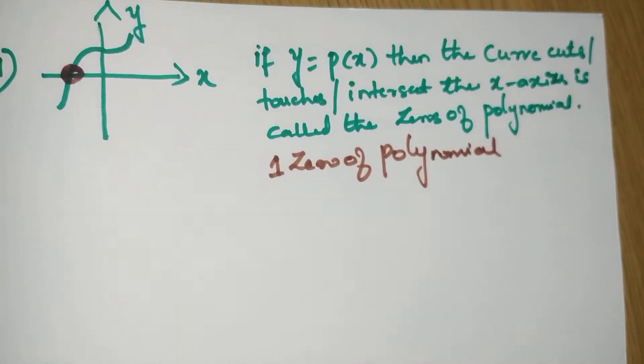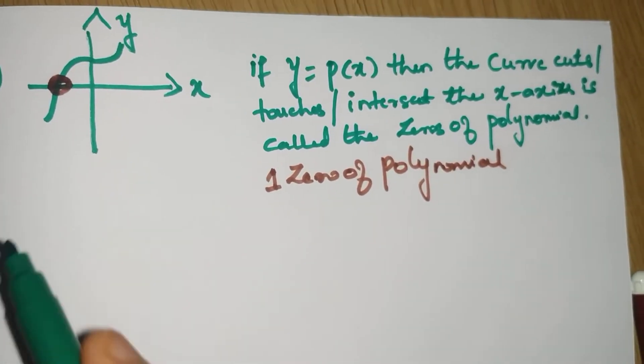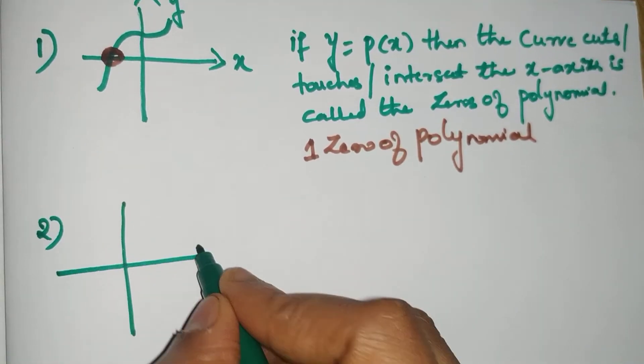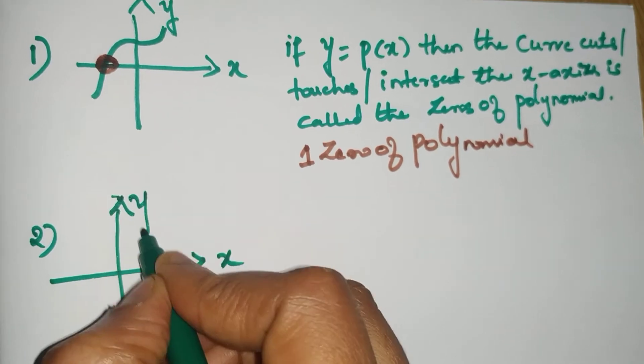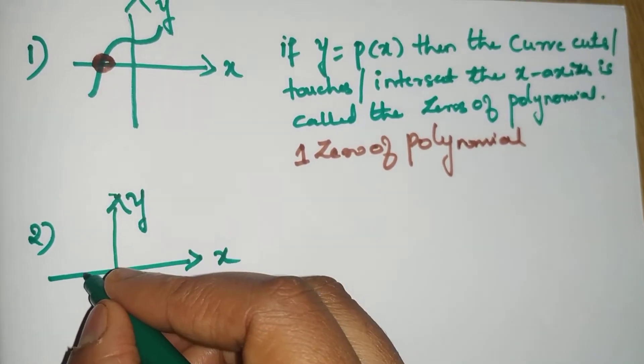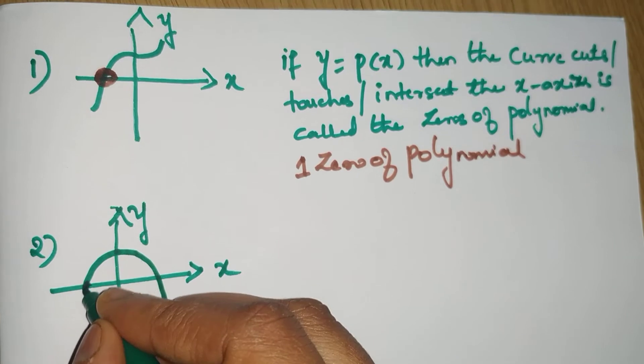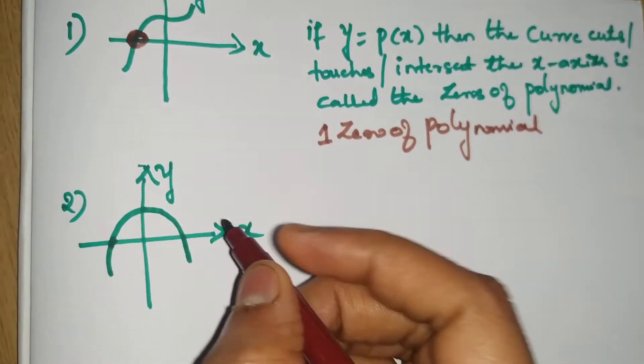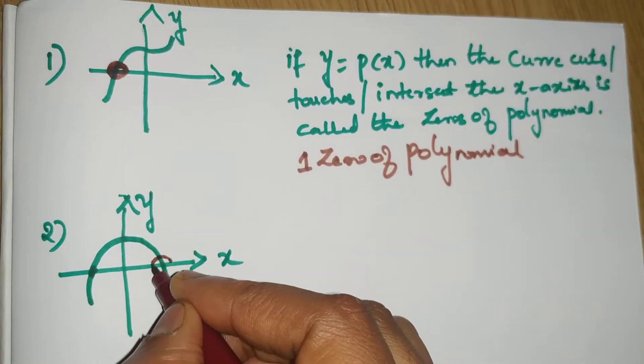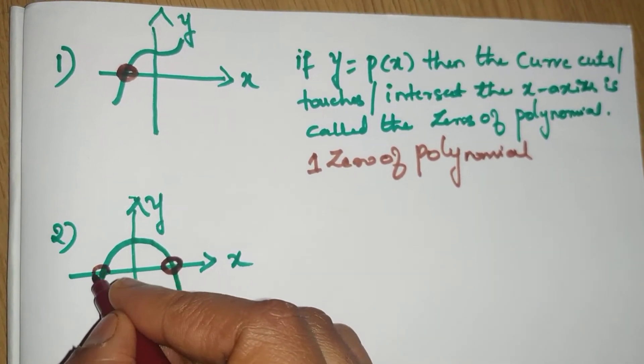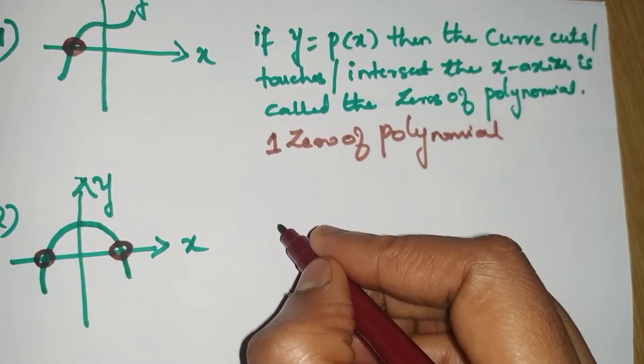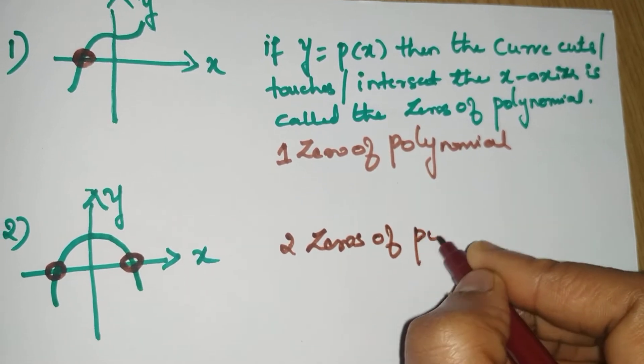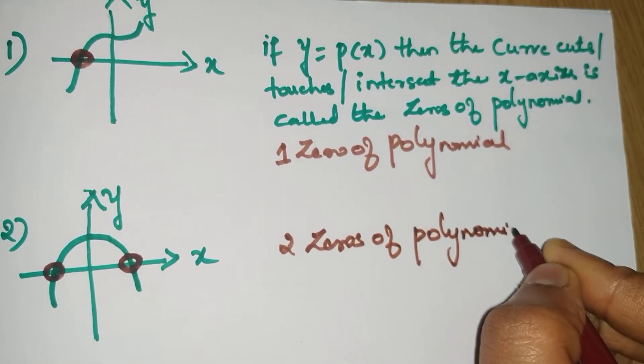Now let us take one more example. Second one, consider the x and y axis. You have a curve of this form. It is a parabolic curve. Here you can see two points are touching the x-axis. So in this case we have two zeros of polynomial.